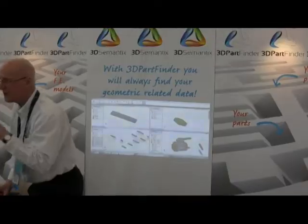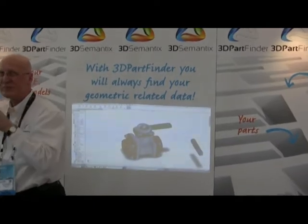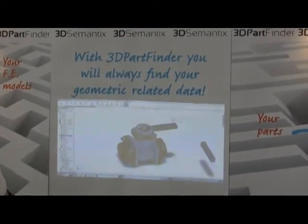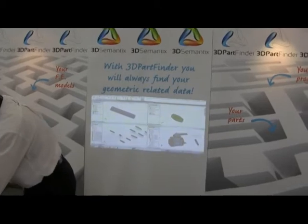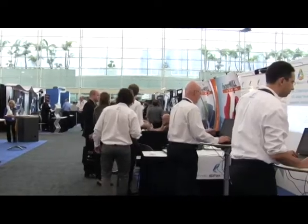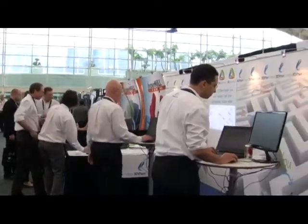3D Part Finder is a geometric search engine that is totally embedded in SOLIDWORKS. It could be sold as an add-on, it could be added to your product, and it could help all the users of SOLIDWORKS to improve their productivity and basically the way they work with SOLIDWORKS. And it's good for even very complex geometry or sheet metal or whatever.